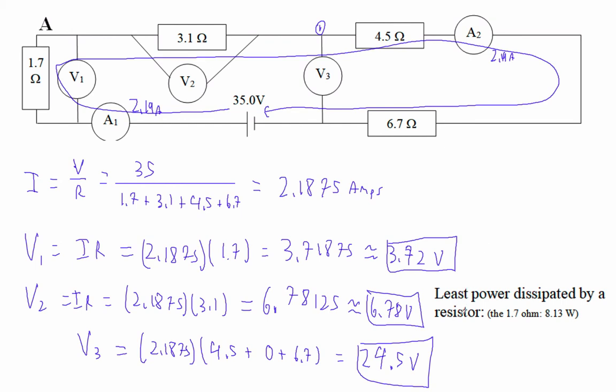So then they ask this, you know, the curveball question, the least power dissipated by a resistor. Well, the least power is either going to be dissipated by the smallest resistor or the largest resistor, but here's the deal, okay?